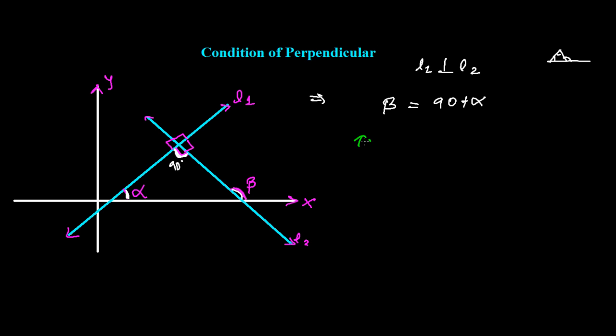What I'm gonna do is take tan both sides, so I'll have tan beta equals to tan 90 plus alpha. What is tan 90 plus alpha? That's minus cot alpha. I hope you know the trigonometric rules. And minus cot alpha we can further write as minus 1 over tan alpha. I'm just using simple trigonometric rules.